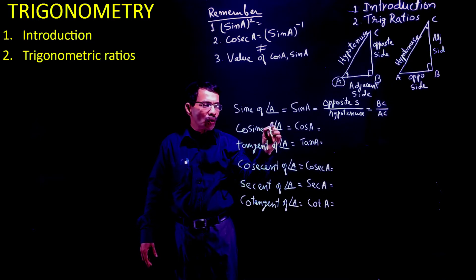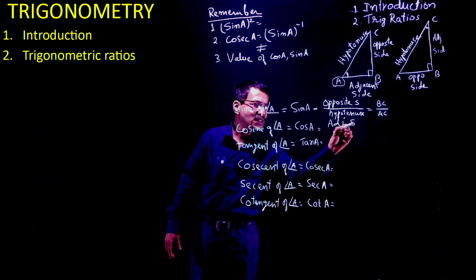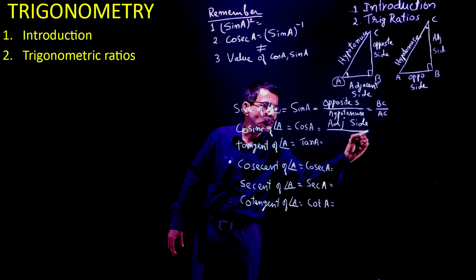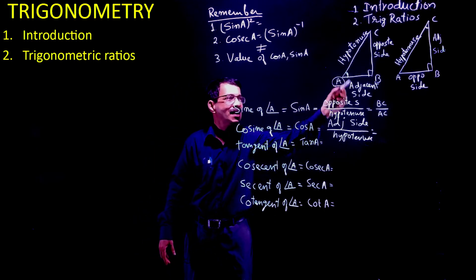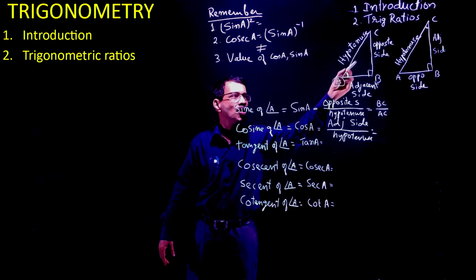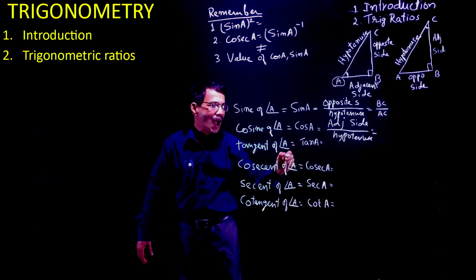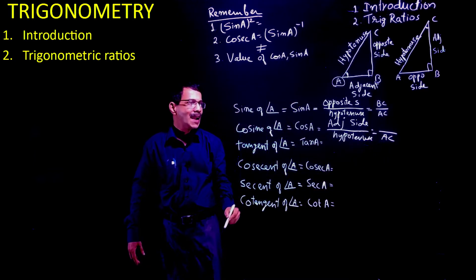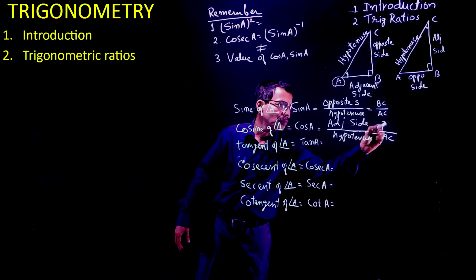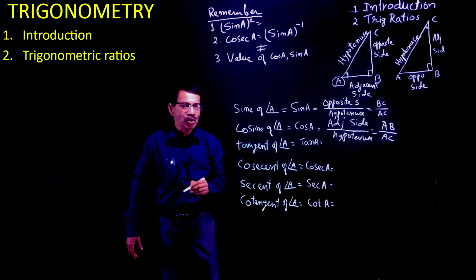Next, cos A is adjacent side divided by hypotenuse. Sine A was opposite side upon hypotenuse; cos A is adjacent side upon hypotenuse. The hypotenuse is AC, and the adjacent side is AB. So cos A equals AB upon AC — that is adjacent side upon hypotenuse.